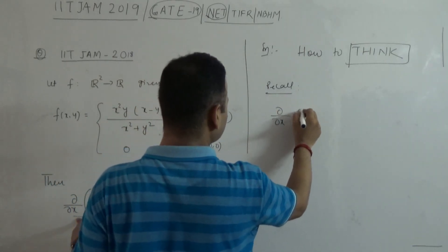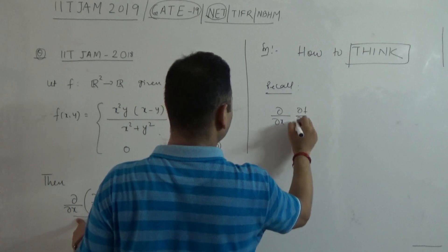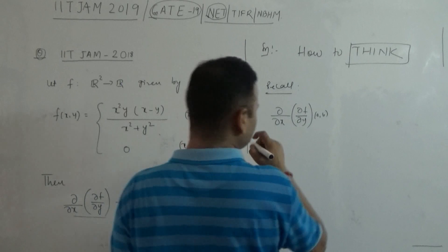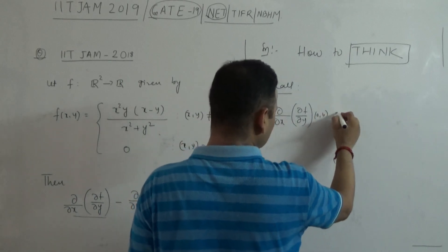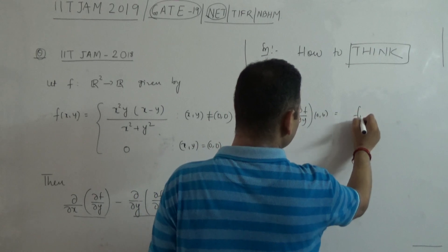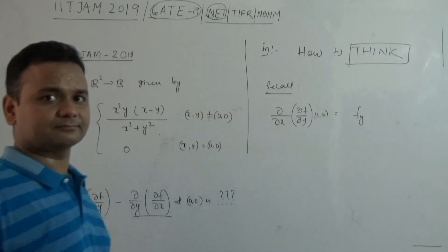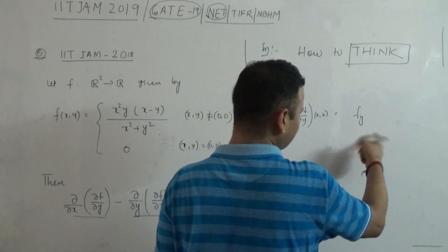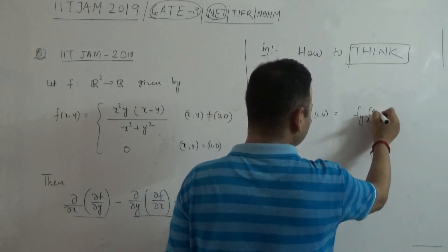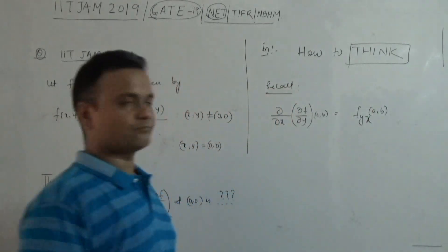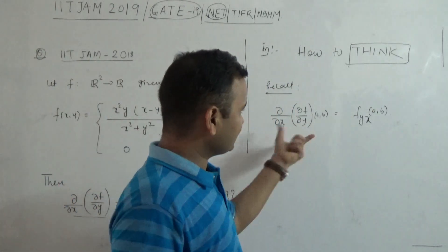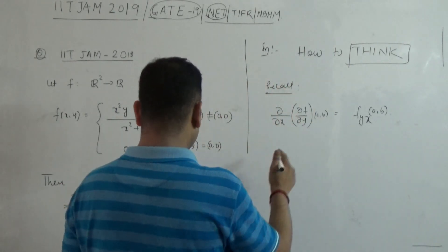First, partially differentiate with respect to Y. Then, differentiate partially with respect to X at the point. That's it. And similarly, del by del x of del f by del y at (a, b): first you differentiate partially with respect to X, then you differentiate with respect to Y and evaluate the value at (a, b).